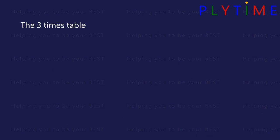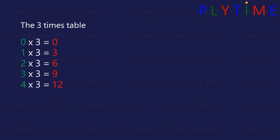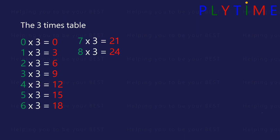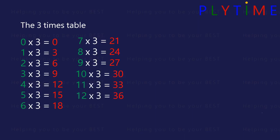Let's look at the three times table. Zero times three is zero, one times three is three, two times three is six, three times three is nine, four times three is twelve, five times three is fifteen, six times three is eighteen, seven times three is twenty-one, eight times three is twenty-four, nine times three is twenty-seven, ten times three is thirty, eleven times three is thirty-three, and twelve times three is thirty-six.